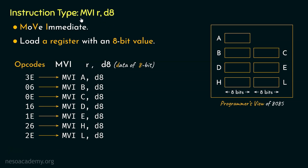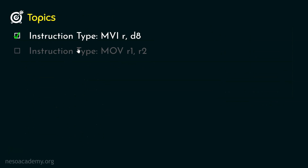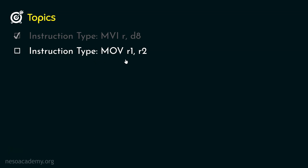So this is all about the MVI R,D8 instruction type. Remember, this is MOVE IMMEDIATE — that's the mnemonic for it. R stands for any of these 7 registers, and D8 is the data which will be immediately fed to the particular register. That was all about the instruction type MVI R,D8. Let's now learn about the next instruction type: MOV R1,R2.